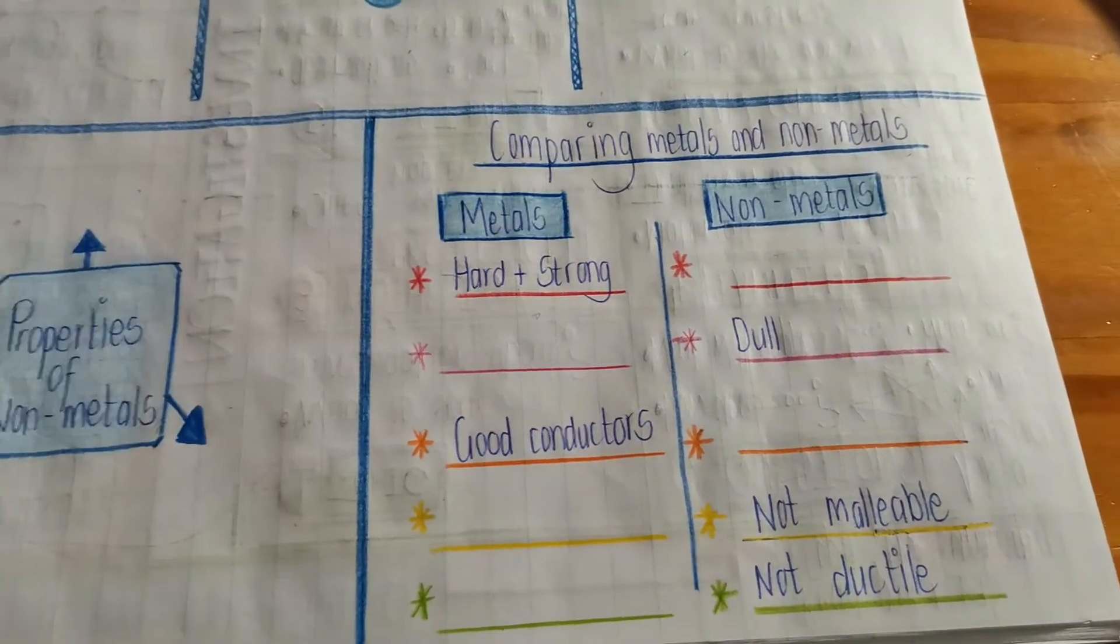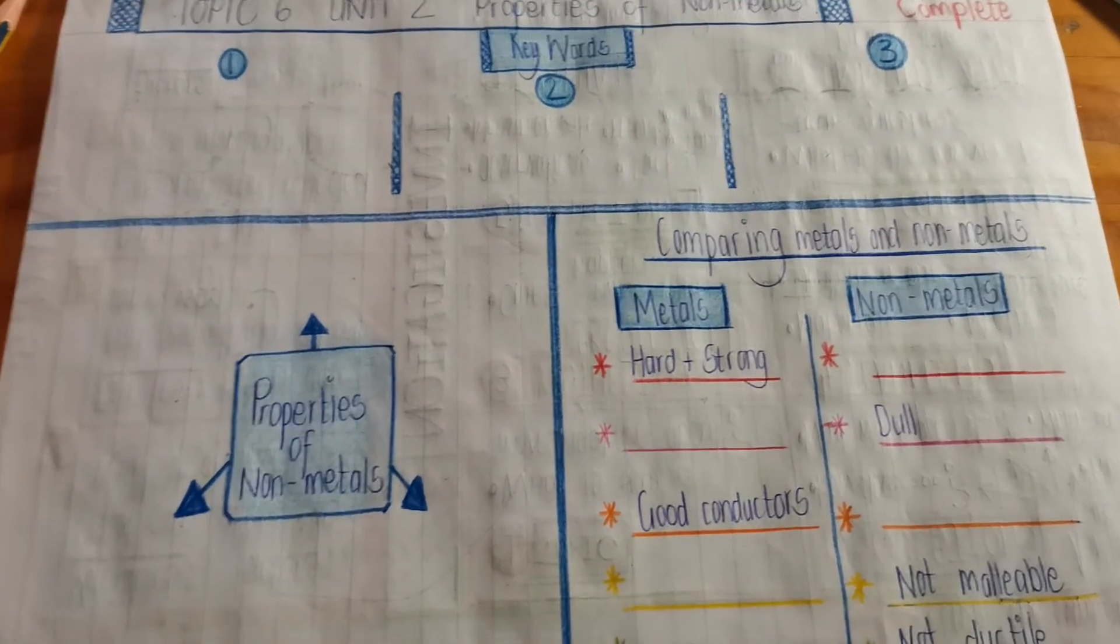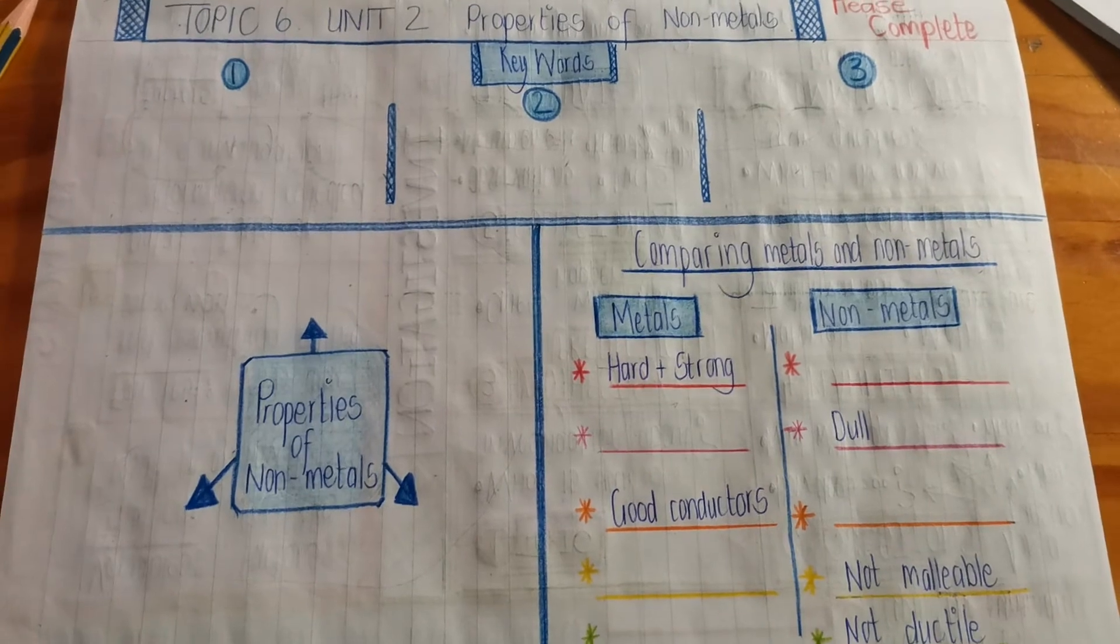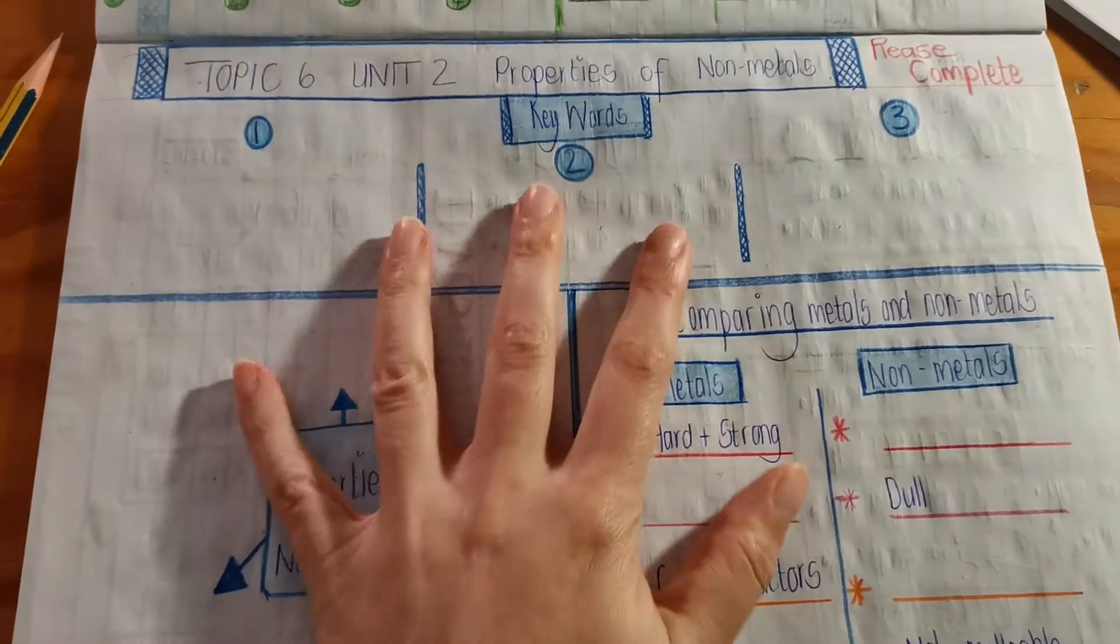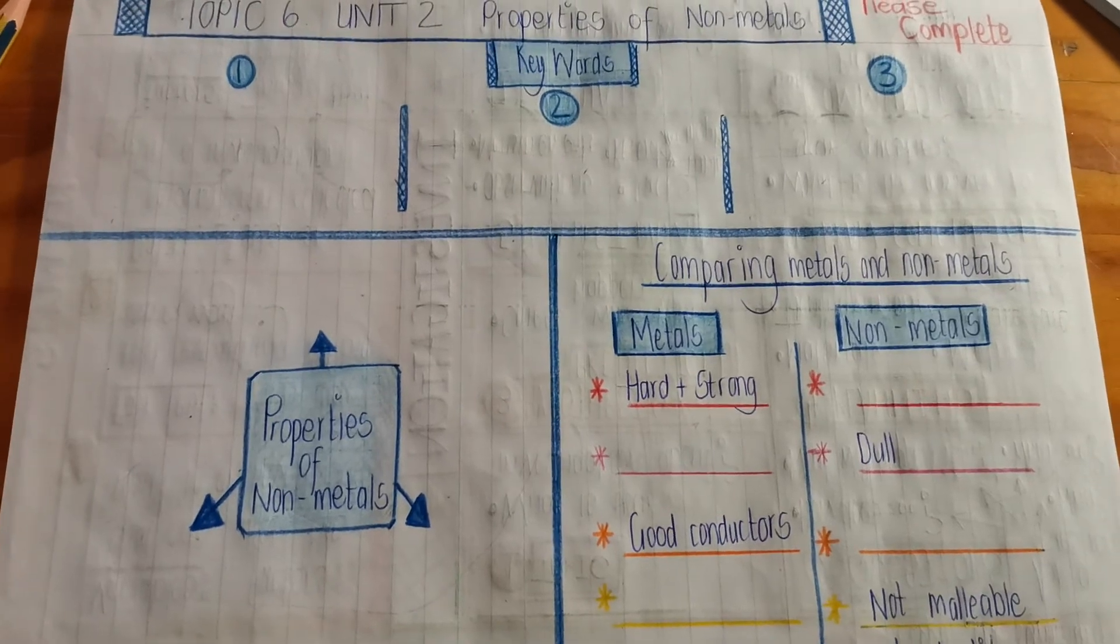Easy peasy. Now, go and do it quickly. So, properties of non-metal, not a big work to do. It is just one little summary. So, quickly do that, then we can move on to the next section.